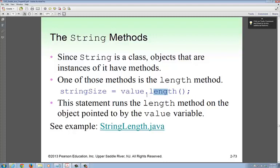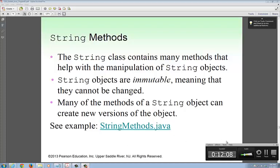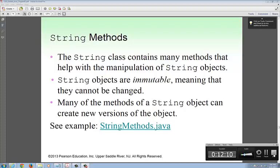So when you look at the next one, here's another string method. A string class contains many methods that help the manipulation of strings. String objects are immutable, meaning that they cannot be changed. You can't change a string. Let me check the time on this thing. I've got to stop. Thank you.